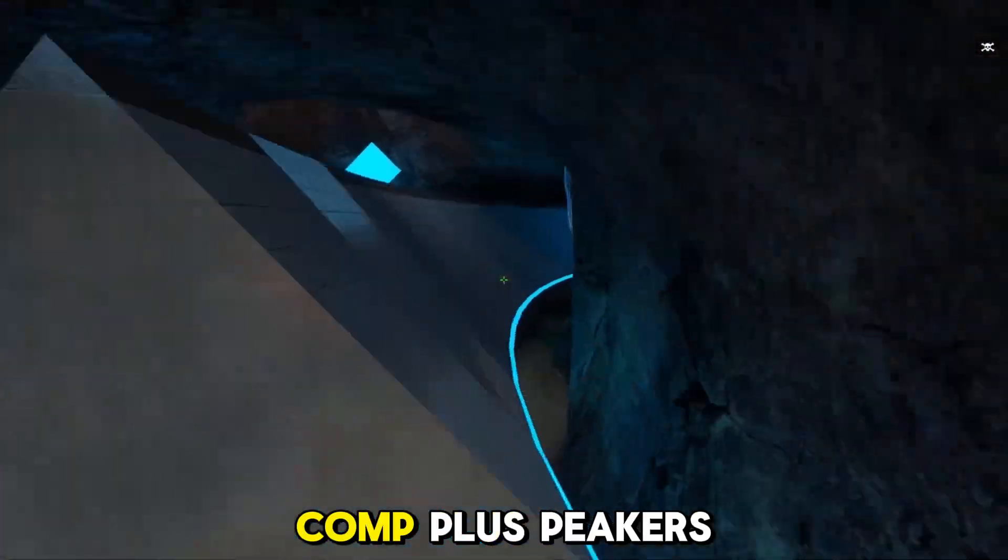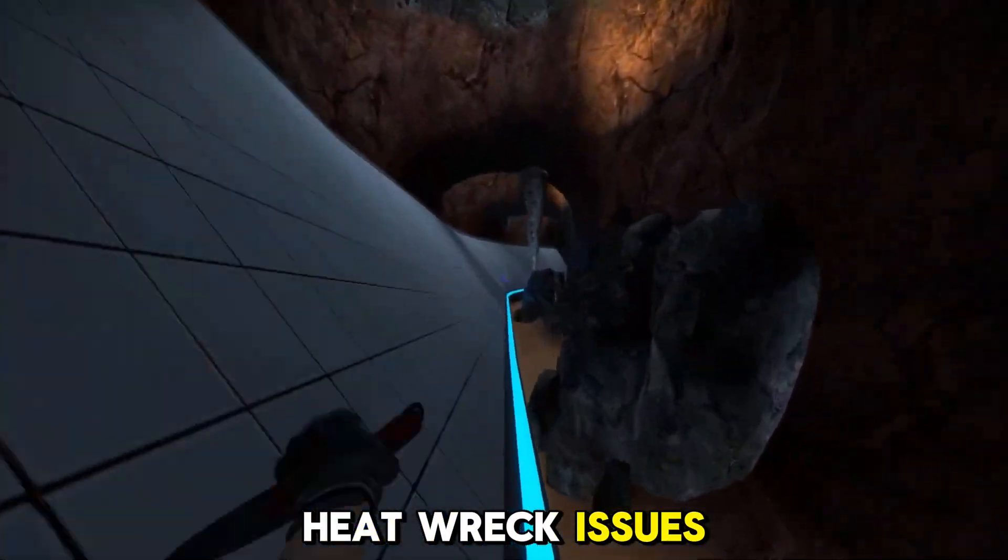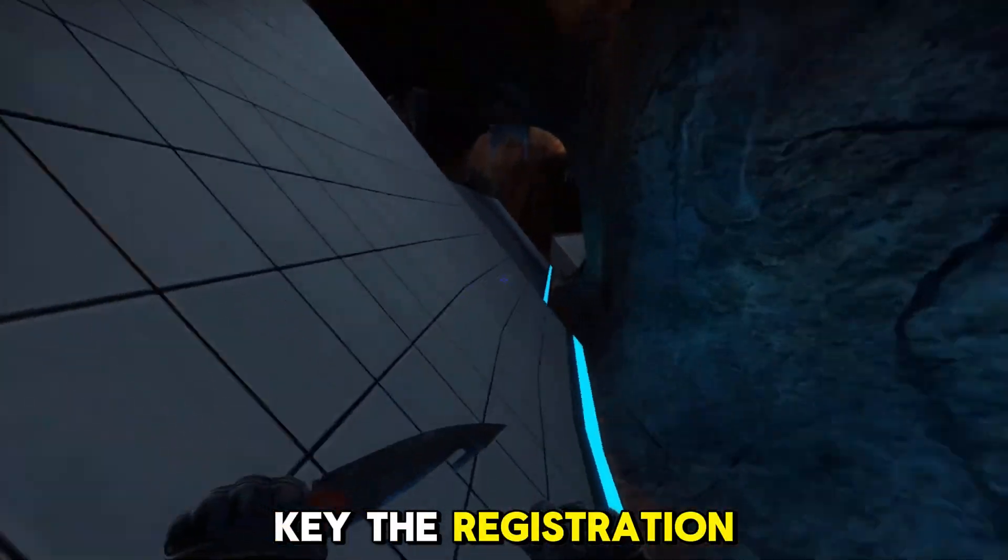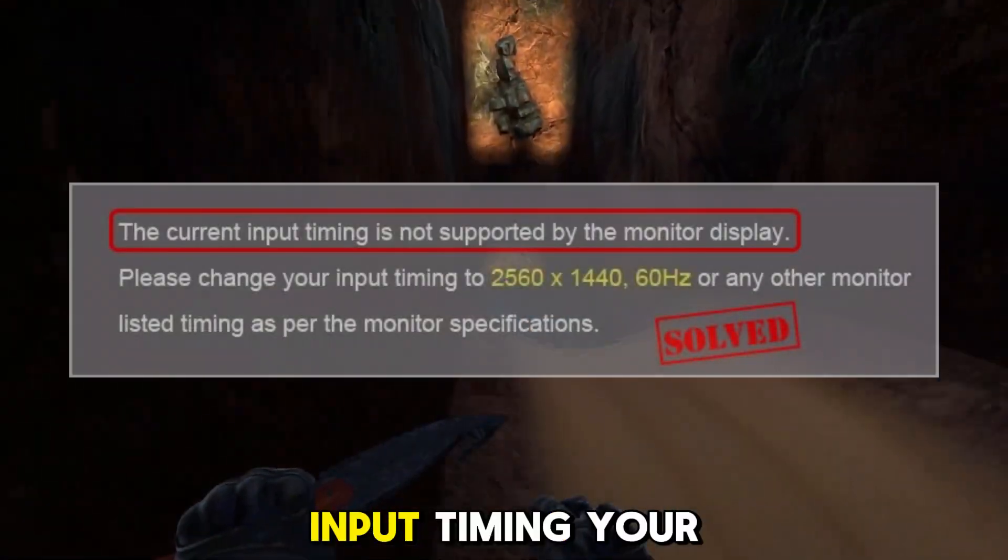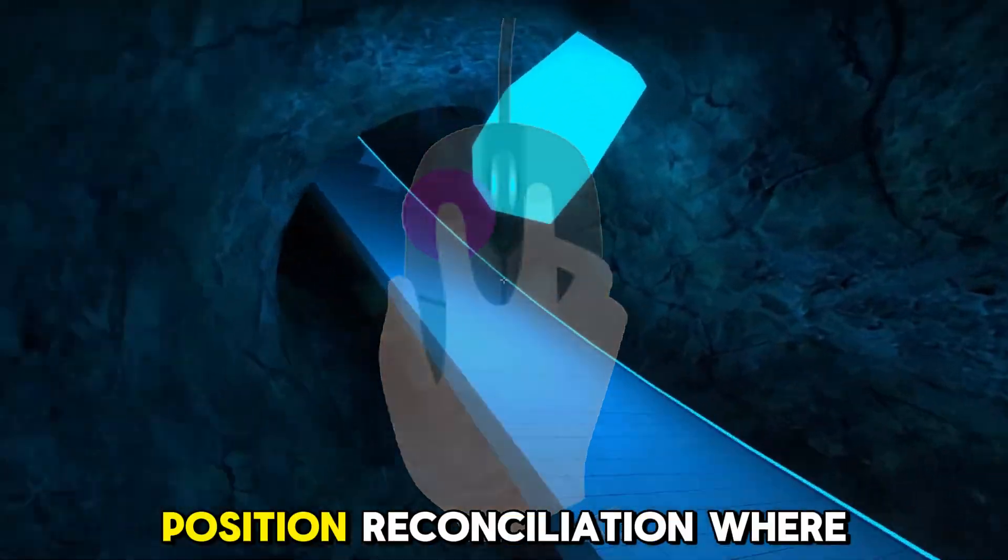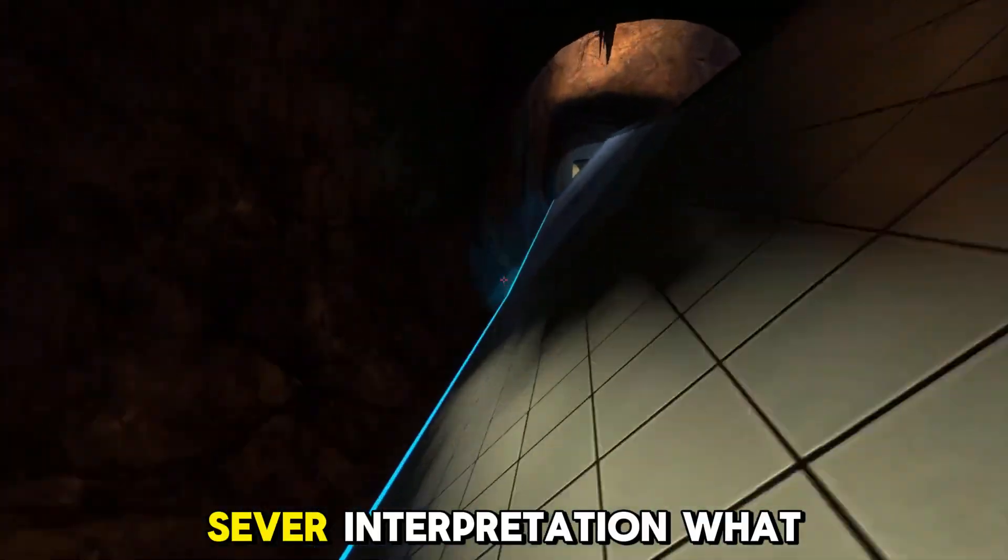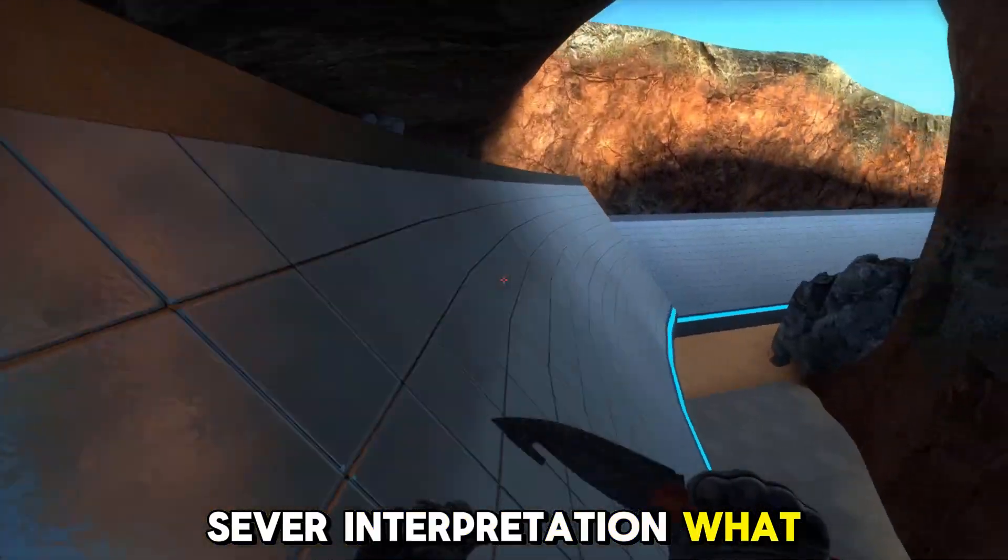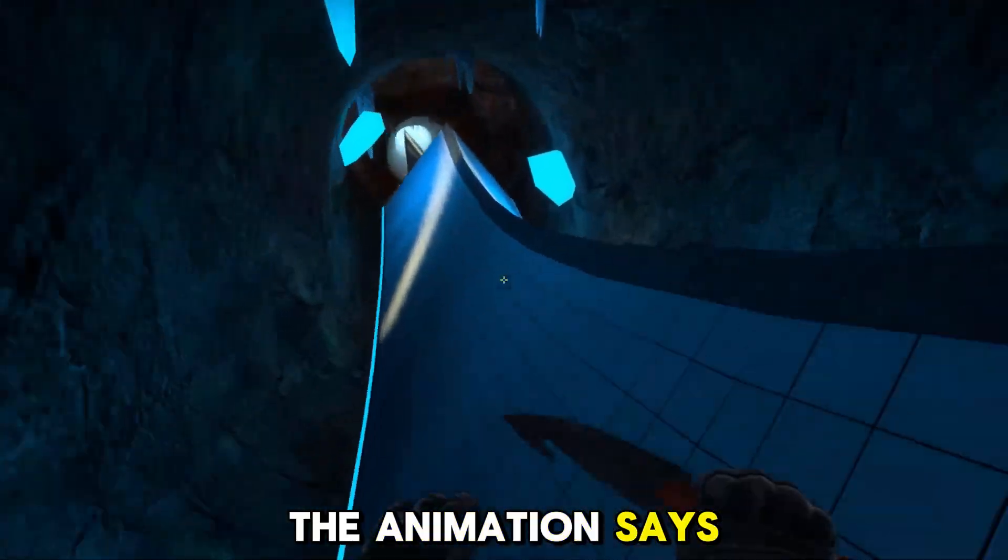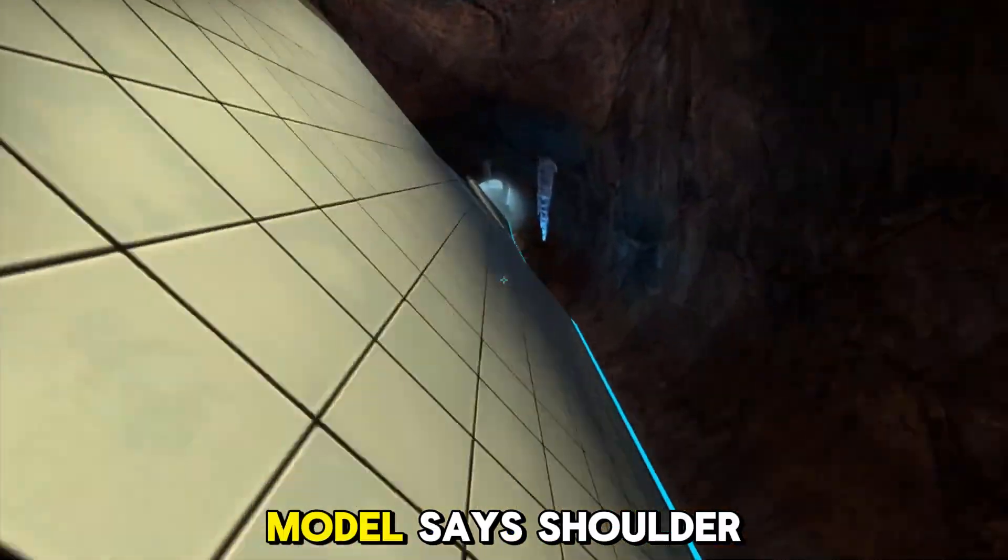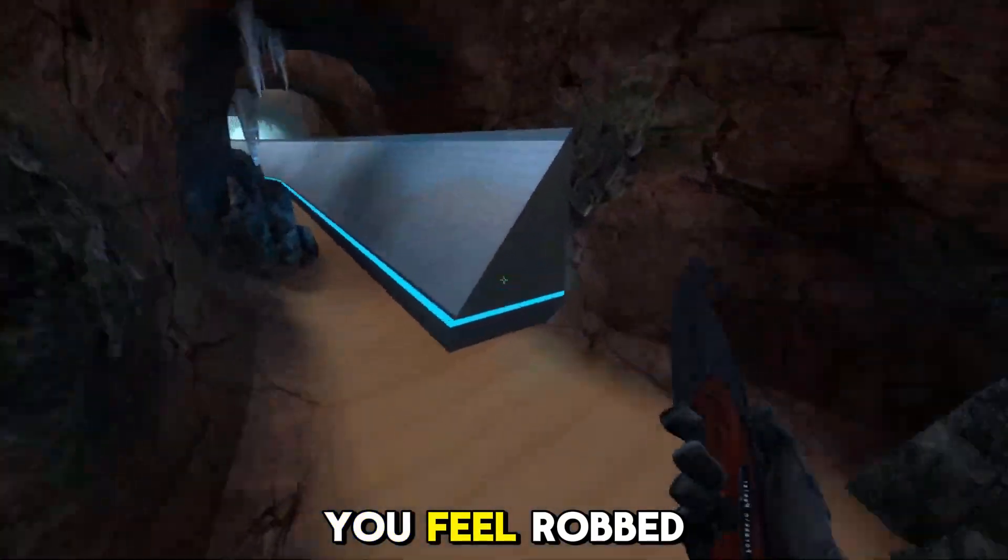Hit reg issues explained: Hit registration in CS2 depends on three things—input timing (your mouse click), position reconciliation (where the enemy was), server interpolation (what should have happened). In many cases the animation says headshot but the server model says shoulder. That's the disconnect and it's why you feel robbed.